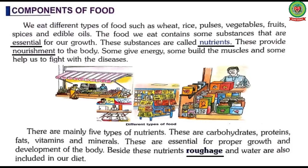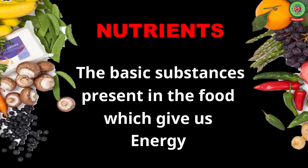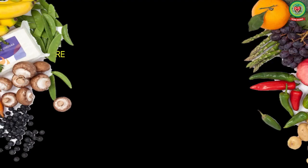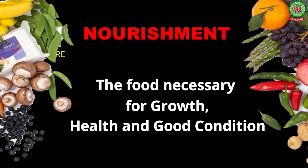Underline the word 'nutrients' and write down its definition: the basic substances present in food which give us energy. These provide nourishment to the body — some give energy, some build muscles, and some help us to fight diseases. Underline the word 'nourishment' and write down its meaning: the food necessary for growth, health, and good condition.